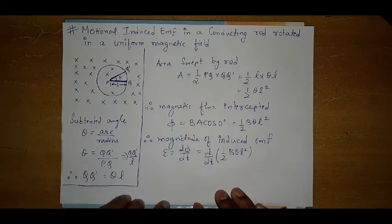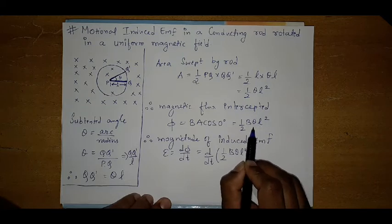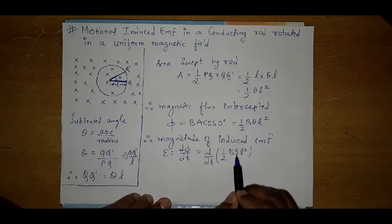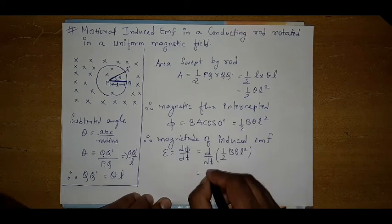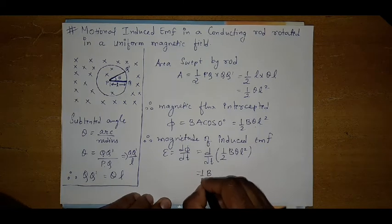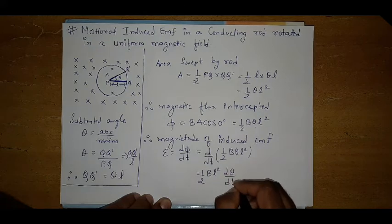Now we see that all terms are constant. B is constant, L is constant. Only the subtended angle theta is changing. So we write it as half B L square d theta by dt.